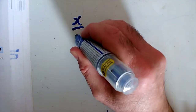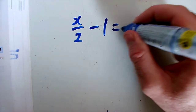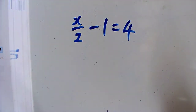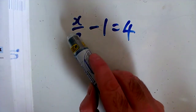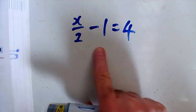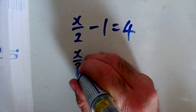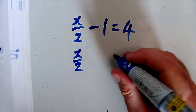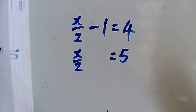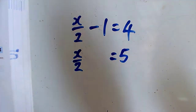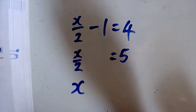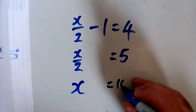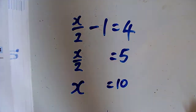Question B: x over 2 minus 1 equals 4. I want to get closer to the bit with x in, so I'd like to get rid of the minus 1. Adding 1 to both sides to cancel it out, x over 2 equals 5. But I don't want to know what x divided by 2 is — I want a whole x. So multiplying both sides by 2, x equals 10.